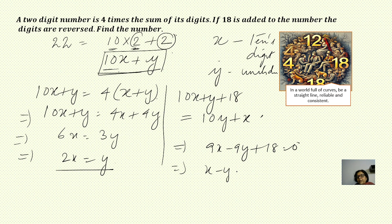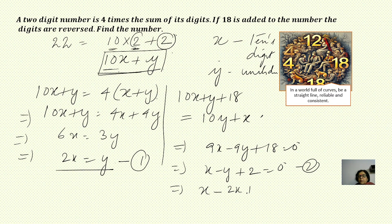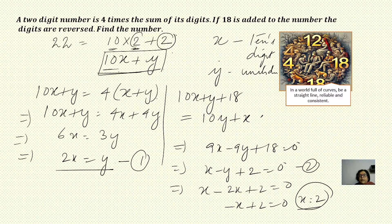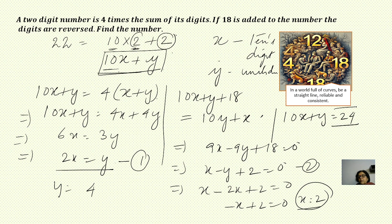Simplifying the second equation: 9x minus 9y plus 18 equals 0, taking 9 common gives x minus y plus 2 equals 0. Since y equals 2x, substituting gives x minus 2x plus 2 equals 0, so minus x plus 2 equals 0, meaning x equals 2. Then y equals 2 into 2, which is 4. The number is 10x plus y, which becomes 24. Check: 24 plus 18 equals 42 — the digits are reversed.